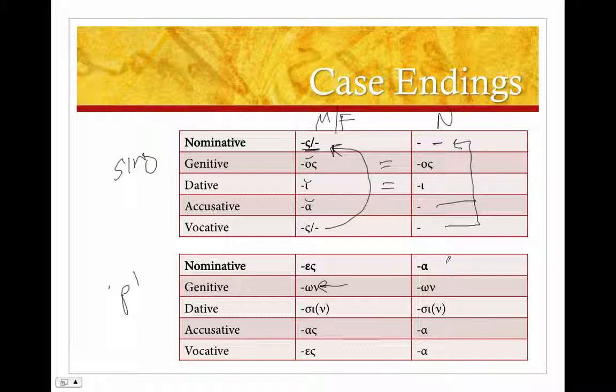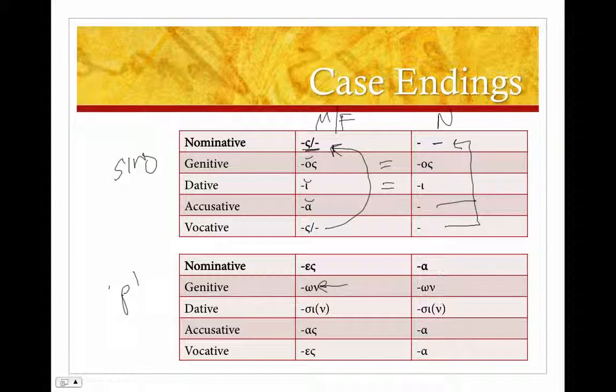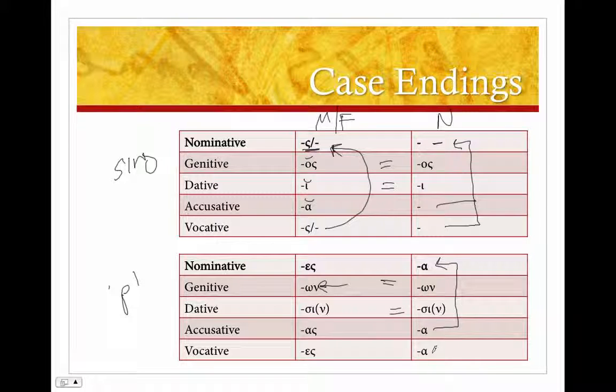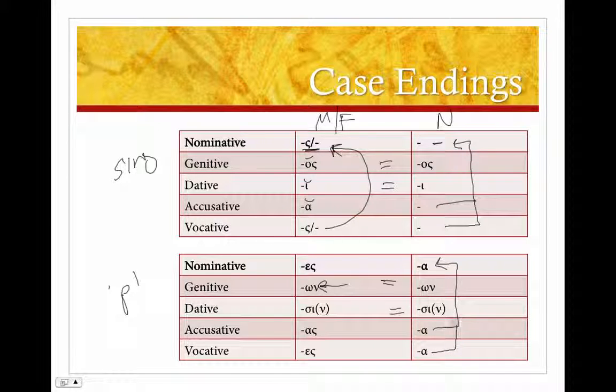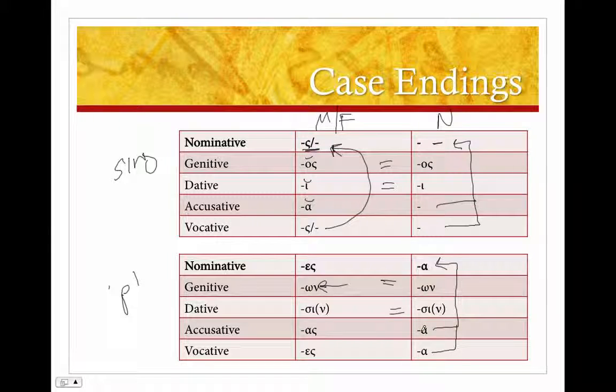And in the plural, -a, right, and you would have guessed that because that's rule number two, that all nominative plural neuters end in -a or alpha. -Own, same as masculine feminine. -Sin, same as the dative. -A, and you would have guessed that from the nominative, right, rule number one of neuters. And the vocative is the same as the nominative, so that's also -a.